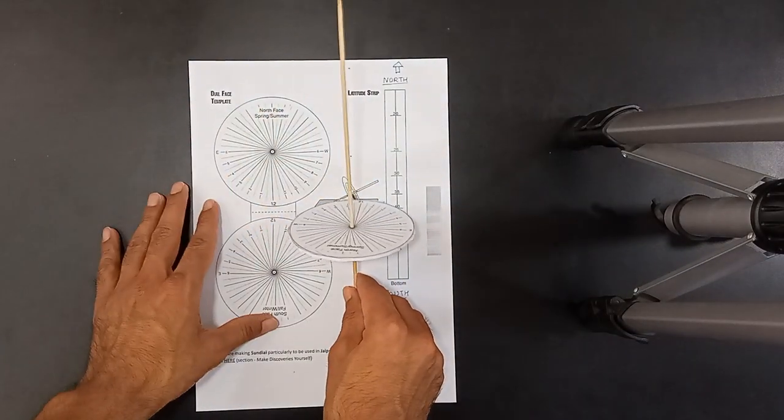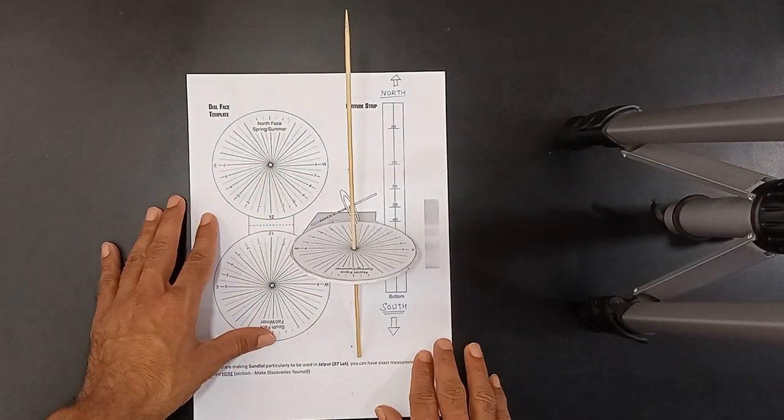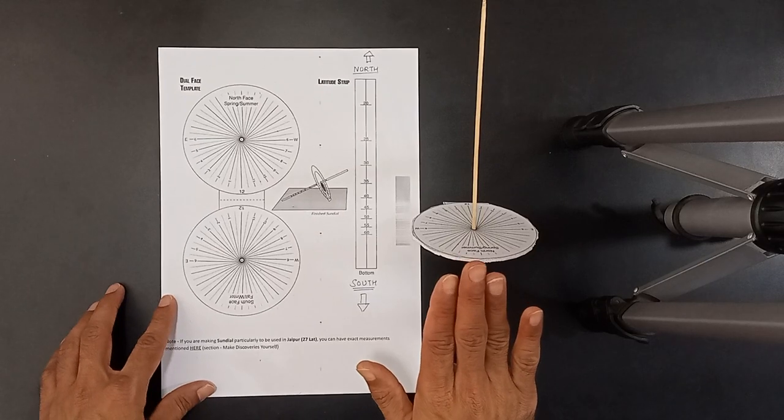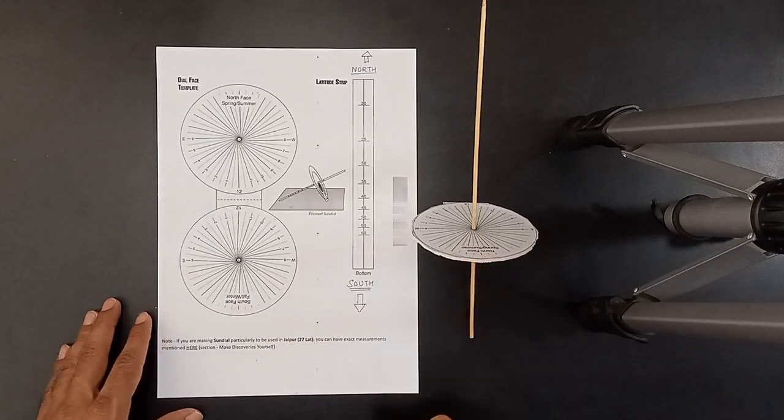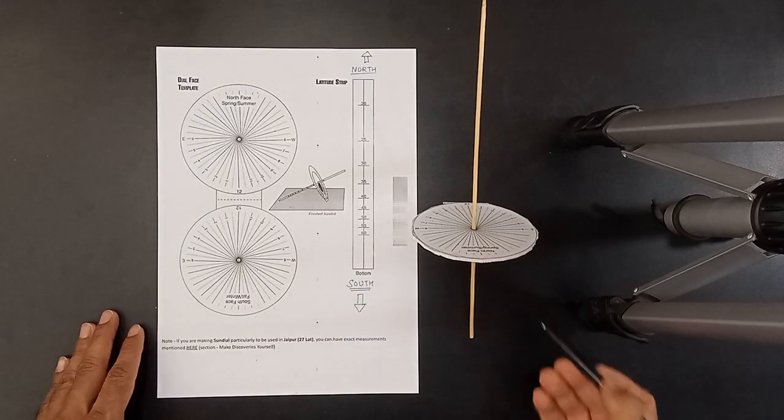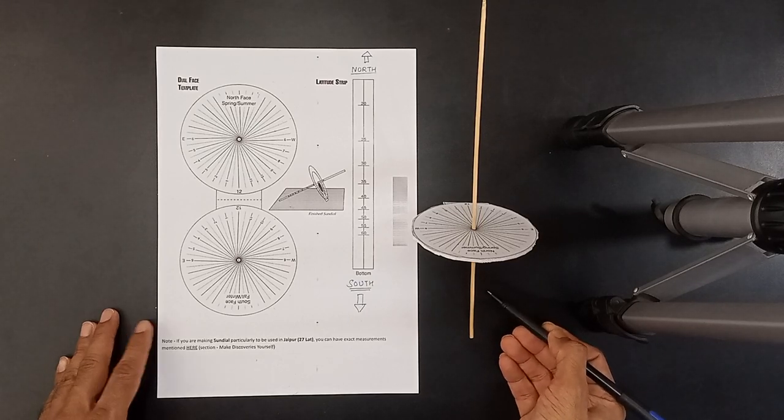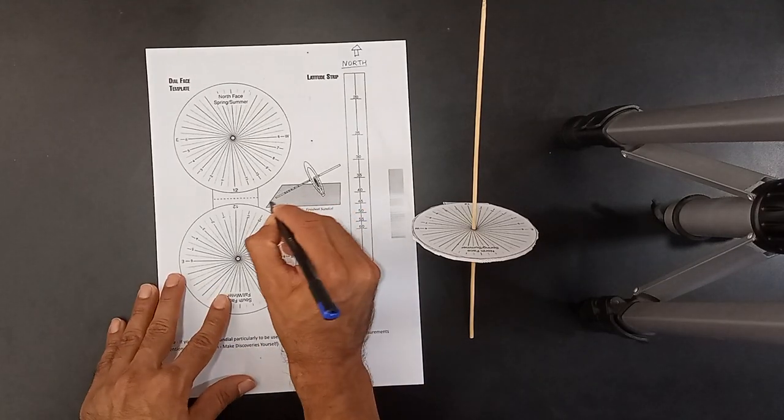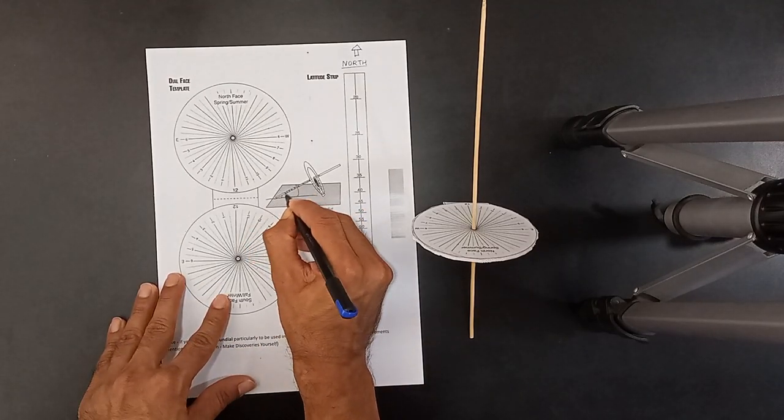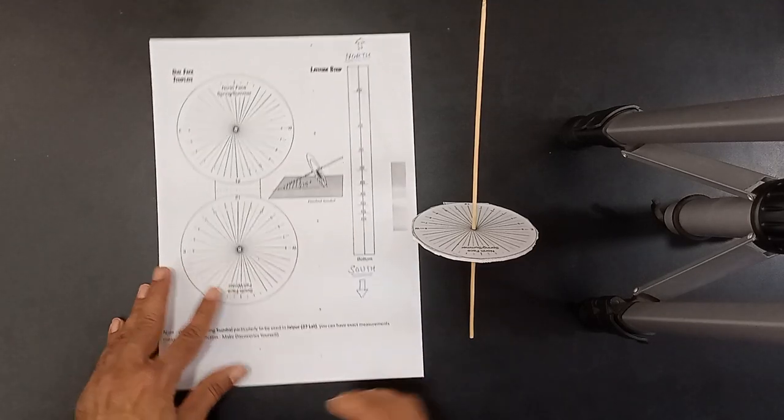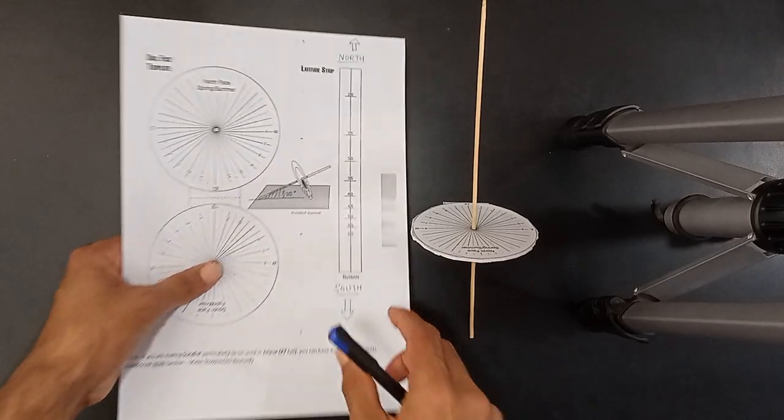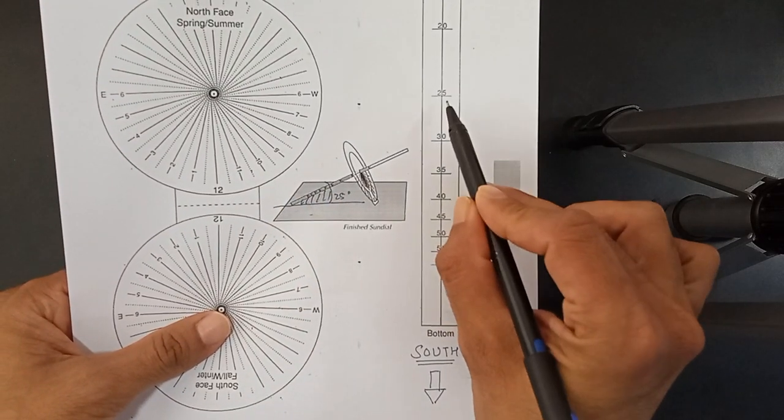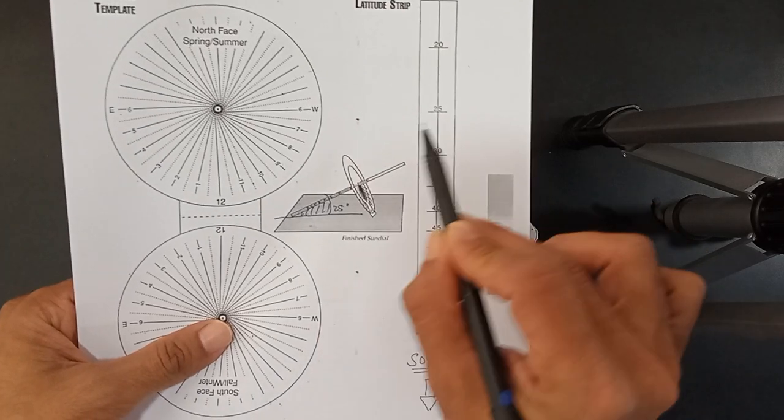Also, once you have placed this sundial onto the ground, the angle that this sundial is making, this stick is making the angle over here, the angle the stick is making with the ground, which is this angle, the angle which this stick is making with the ground is the latitude angle.